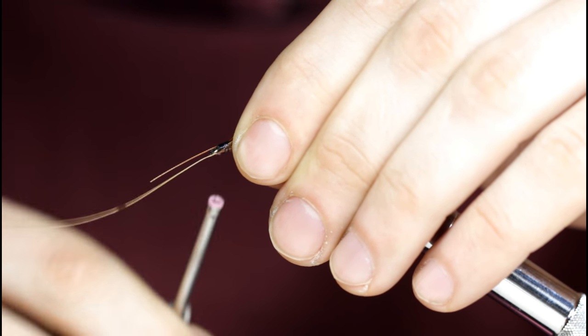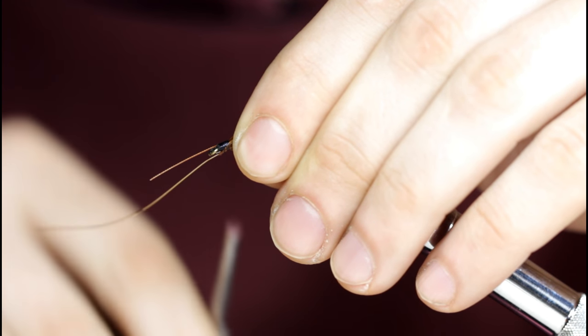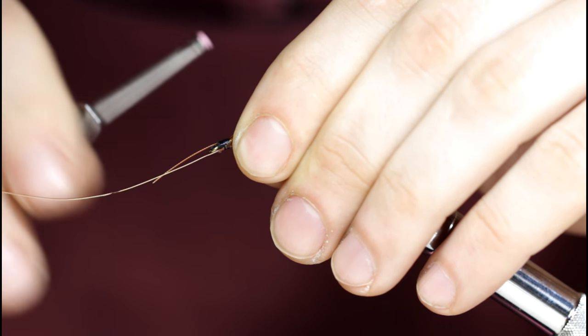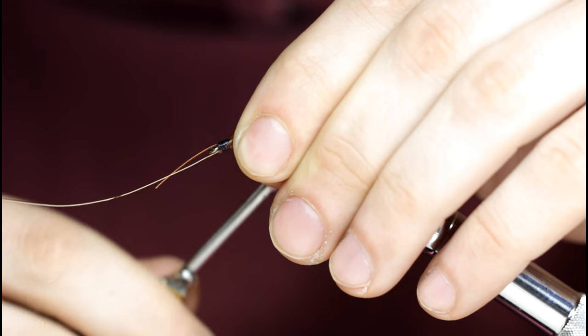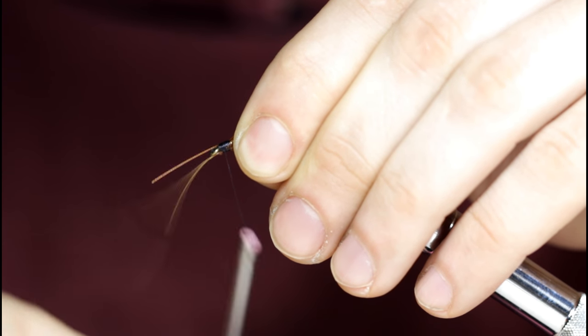Take a few loose turns, same thing, down towards the hook eye. And it slipped a little bit, so I'm just going to pull it back up. You want to keep control, keep all the stem on the side.